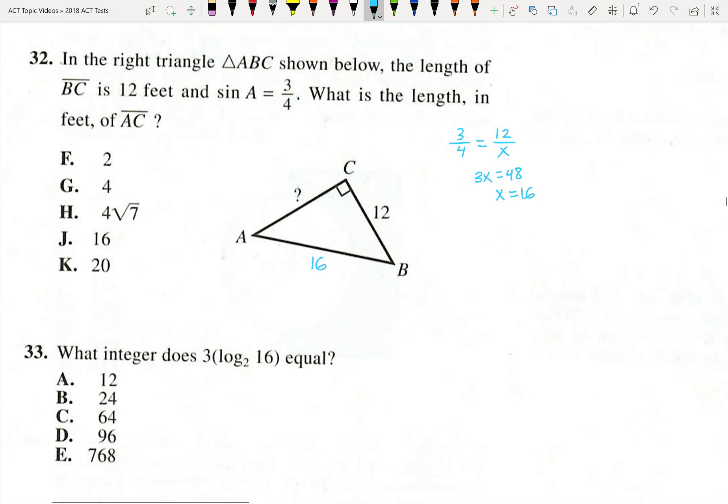From there, if you want to find AC, it's simply a matter of Pythagorean theorem. 12 squared plus that missing side, x squared, equals 16 squared, and that's going to be 144 plus x squared equals 256. That'd be x squared equals, I think, 112.